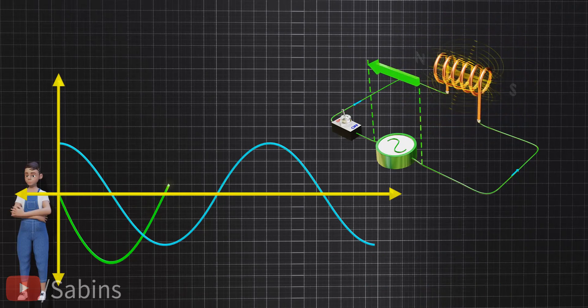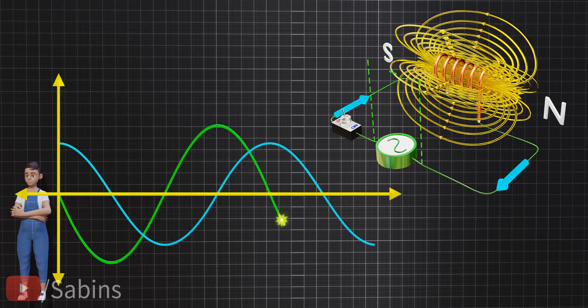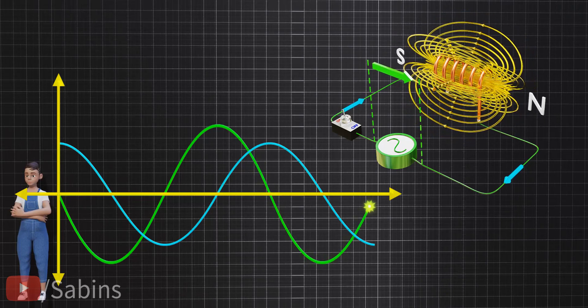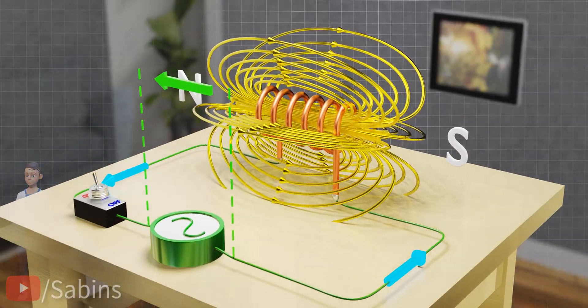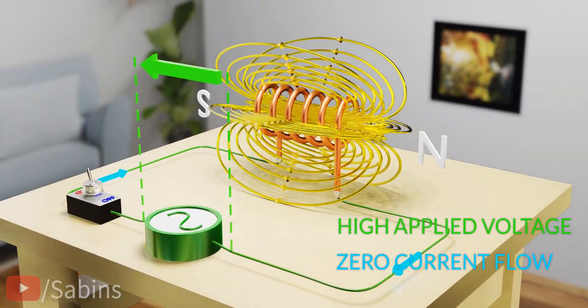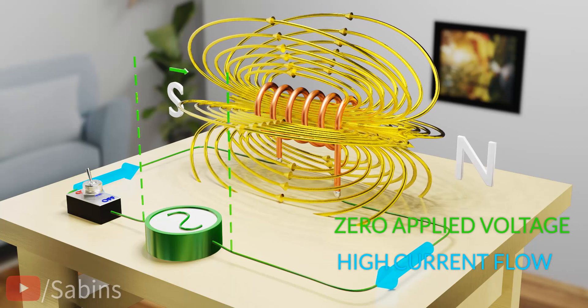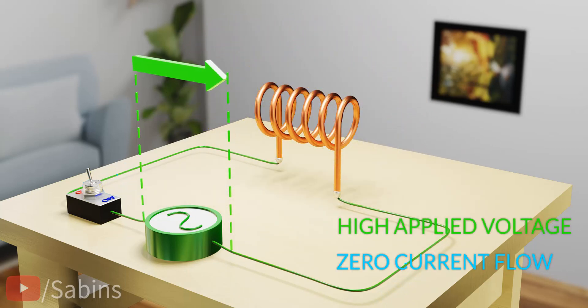In short, when a sinusoidal voltage is applied across a pure inductive circuit, the current will lag the voltage by 90 degrees. This is a crazy behavior. However, using the fundamental laws of physics, we have explained the reason behind it.